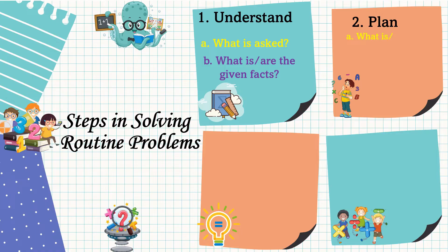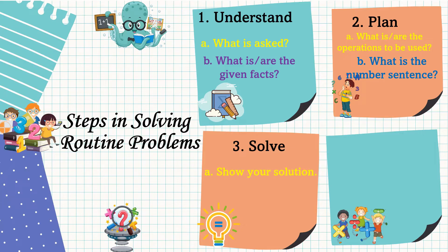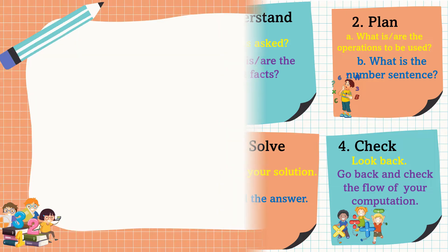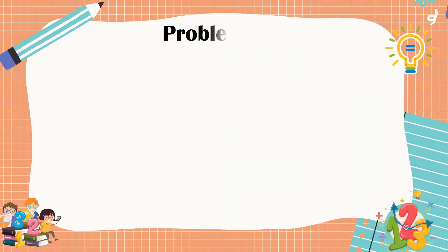Know what is or are the operations to be used and what is the number sentence. The third step is we are going to carry out the plan. Let's solve the problem. In solving, show your solution and label the final answer. Lastly, we are going to check or look back. In checking, go back and check the flow of your computation.